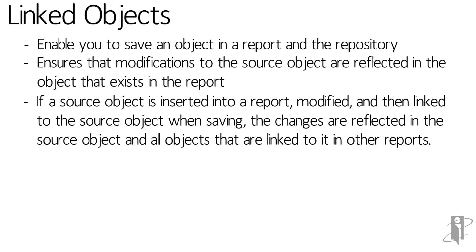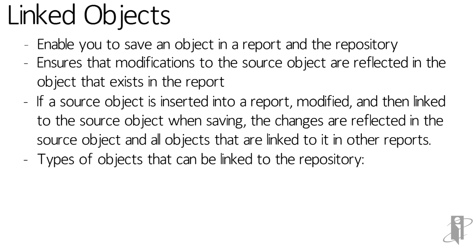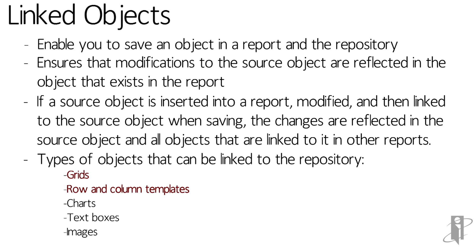If a source object is inserted into a report, modified, and then linked to the source object when saving, the changes are reflected in the source object and all other objects that are linked to it in other reports. For example, suppose you insert a text object called Page Number from the repository. You then modify the format of the object and save, specifying a link to the source object. The modified Page Number text object overwrites the source object in the repository, and any new or existing report that is linked to the Page Number source object reflects this revised text as well. Grids, row and column templates, charts, text boxes, and images are all types of objects that can be linked to the repository and included in your reports.